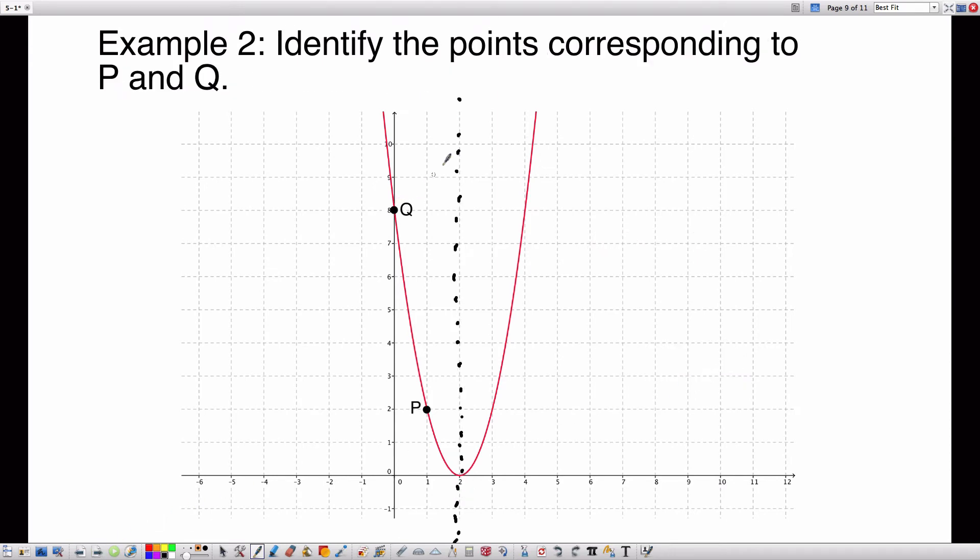The next step is to identify the points corresponding to P and Q. Corresponding means on the opposite side of the axis of symmetry. So I drew the axis of symmetry here. If I go to the other side, this point is 2 away from the axis of symmetry. So if I go 2 to the other side, that's right here. This is the point that corresponds to Q, and this point is at 4, 8. The point that corresponds to P, this is 1 away from the axis of symmetry. If I go 1 over here, that's the point that corresponds to P. And that's the point 3, 2. So that's identifying points that are corresponding on a parabola.